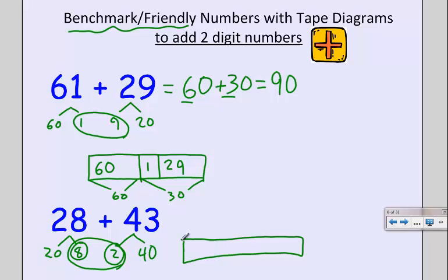I'm going to make 28 be a reasonably big piece. But again, the idea is that I want to make a 10. So I'm going to give 2 from my 43. And now I've got to know what's left.